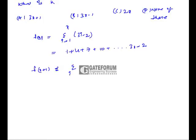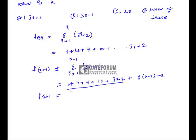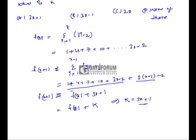Now f(x+1) = Σ (i=1 to x+1) of (3i − 2). Expanding this gives 1 + 4 + 7 + 10 + ... + (3x − 2) up to i=x, which is f(x), plus the additional last term when i = x+1, which is 3(x+1) − 2 = 3x + 3 − 2 = 3x + 1. So f(x+1) = f(x) + (3x + 1). Since the problem gives f(x+1) = f(x) + k, we get k = 3x + 1, so we choose option A.